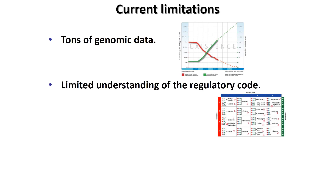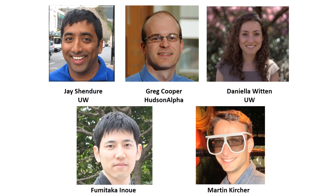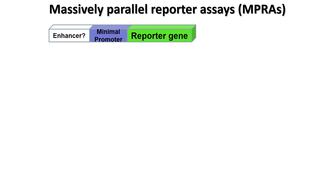With the fact that we have tons of genomic data, a limited understanding of the regulatory code, and a limited functional assay that is not quantitative in nature and cannot test the hundreds of thousands of sequences that we find to be candidate regulatory elements or mutations within them, I'll show you today a collaboration of over eight years with the lab of Jason Doerr at the University of Washington, also in collaboration with Greg Cooper at Hudson Alpha, Daniela Witten at UW, spearheaded by Fumitaka Inawa — an extremely talented postdoc in my lab — and Martin Kircher, who now has his own lab in Berlin. The classic enhancer assay vector has an enhancer, a minimal promoter, and a reporter gene, so we set out to make this more high-throughput.